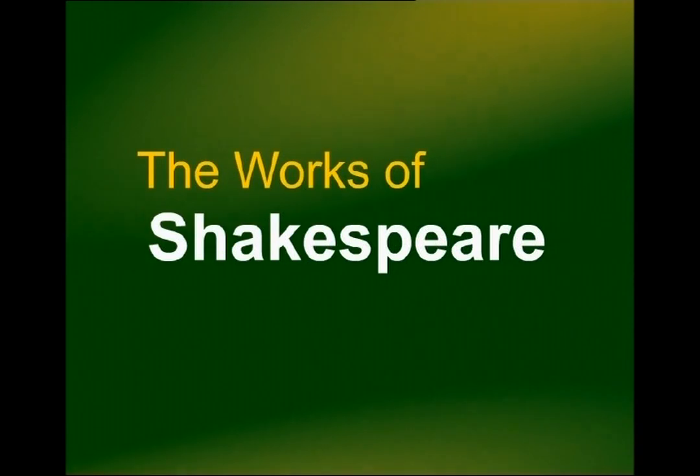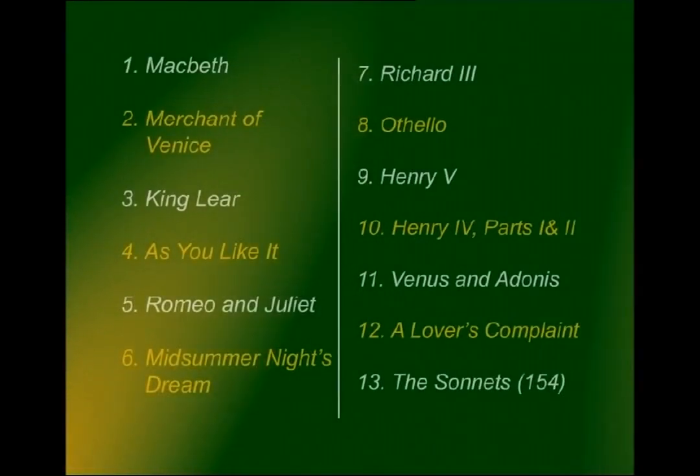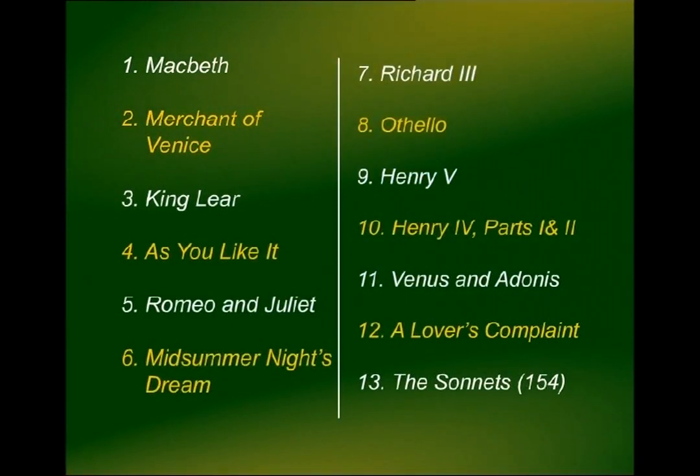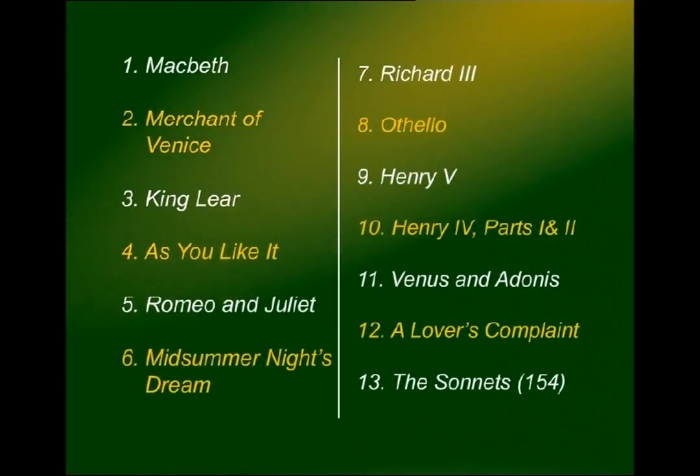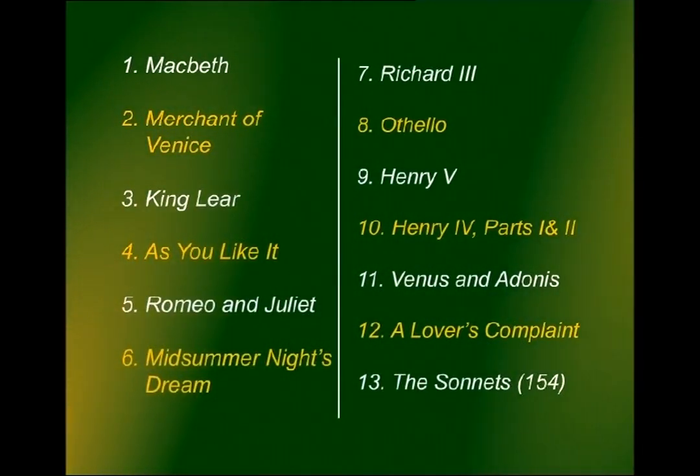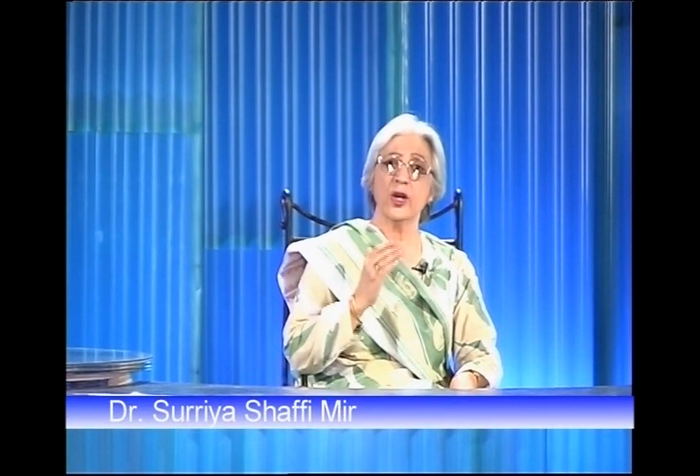Just jot down the names of Shakespeare's works that you can recall: Macbeth, Merchant of Venice, King Lear, As You Like It, Romeo and Juliet, Midsummer Night's Dream, Richard III, Othello, Henry V, Henry IV Parts I and II, Venus and Adonis, A Lover's Complaint, and around 154 sonnets. That was a haphazard list — you can now categorize these works into three or four categories.